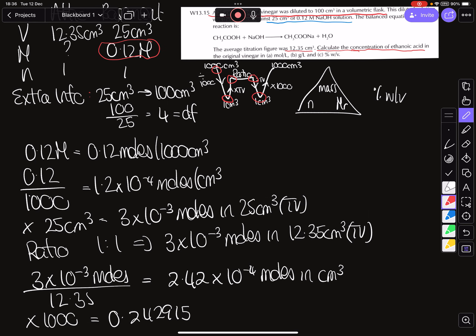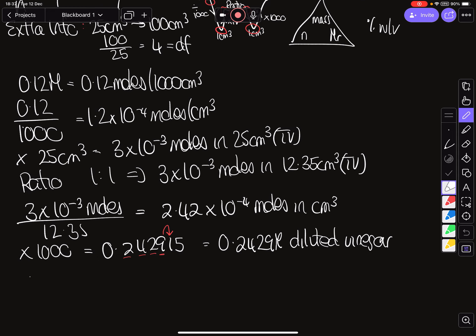If in doubt, default to three significant figures, but looking at our data table there are four significant figures. Counting 1, 2, 3, 4 — the number next to the fourth significant figure is 1, which doesn't change anything, so to four significant figures our answer is 0.2429 Big M. This is our diluted vinegar concentration.